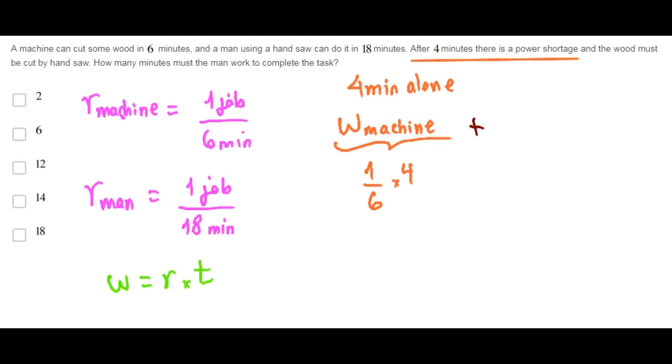Now, after the power shortage the man had to work alone in order to complete the task. The part of the job that the man did is its rate times the time, let t be the time.